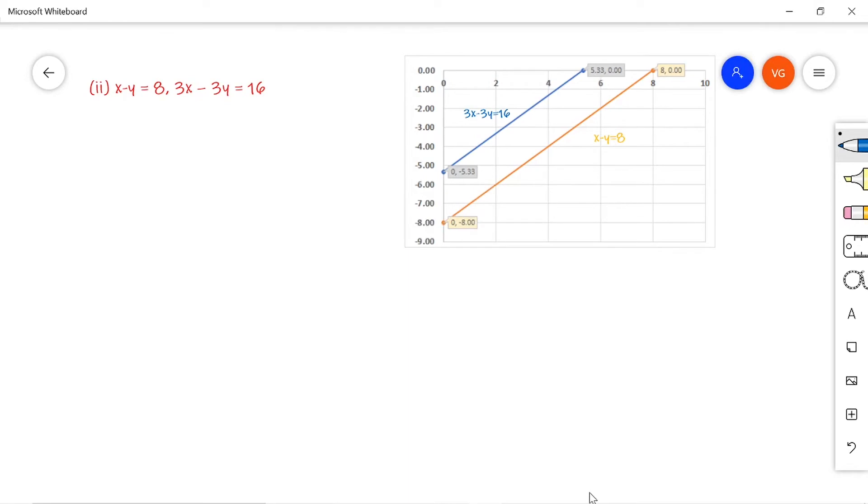Now we will represent the same situation graphically. So x minus y minus 8 is equal to 0 can be written as y is equal to x minus 8. So let us take different values of x and get values for y. So take x is equal to 0.